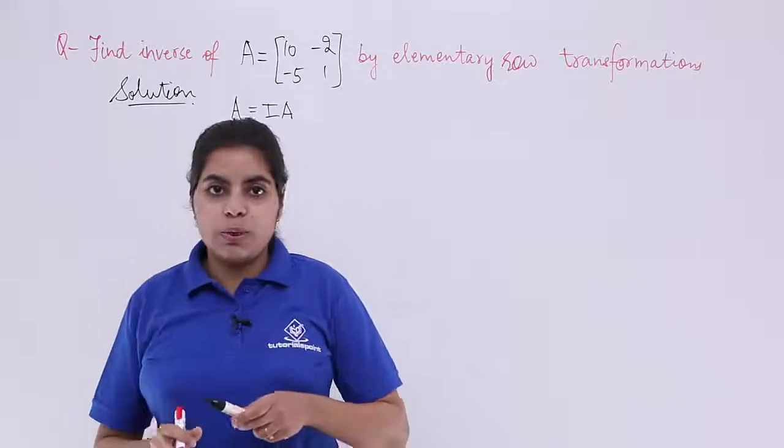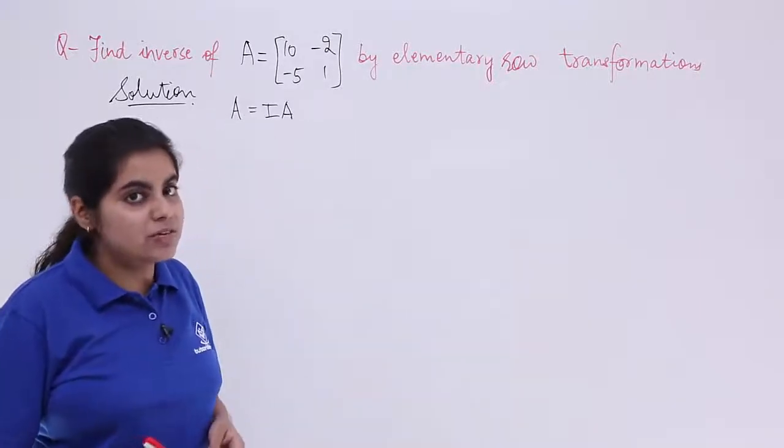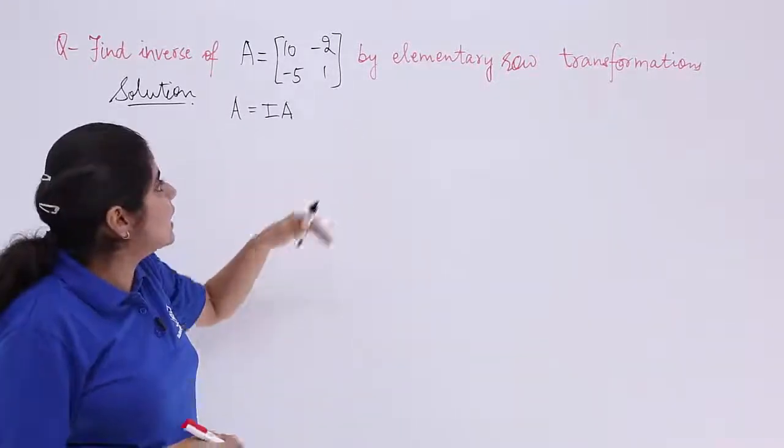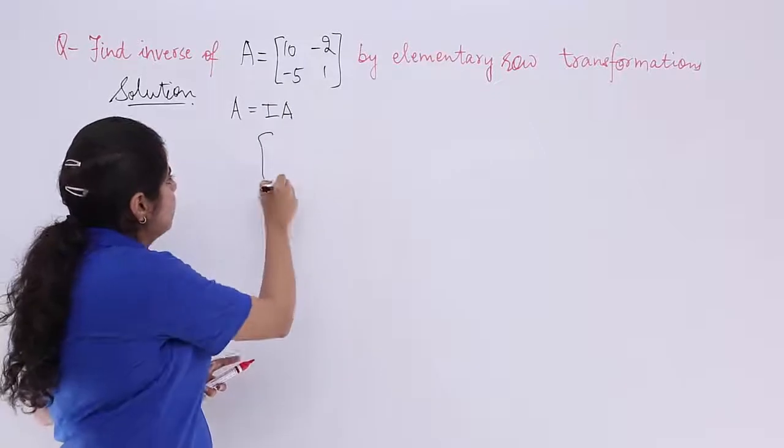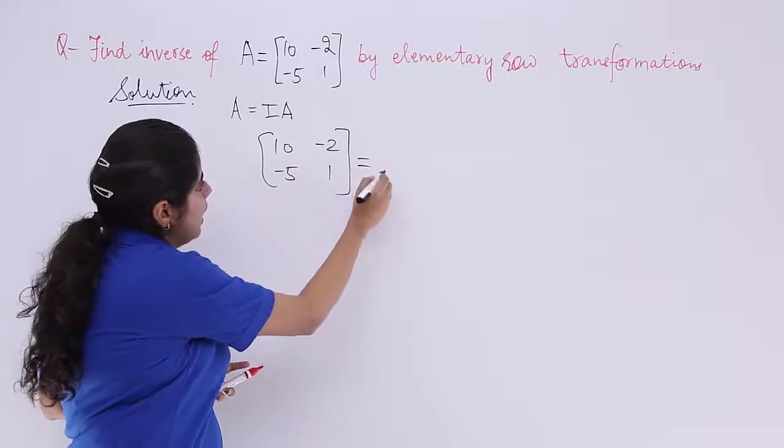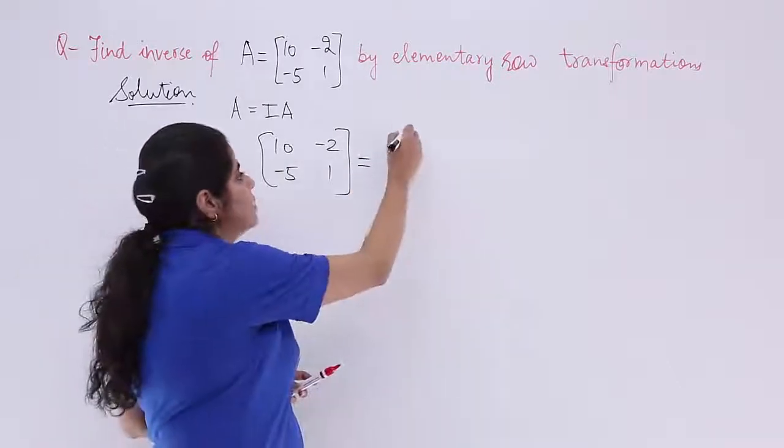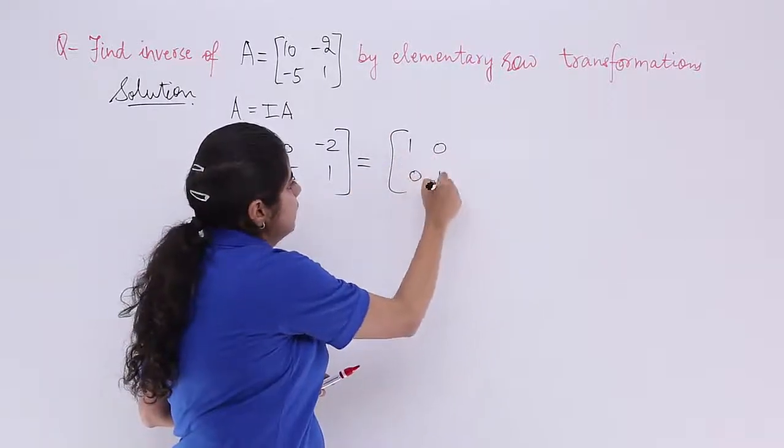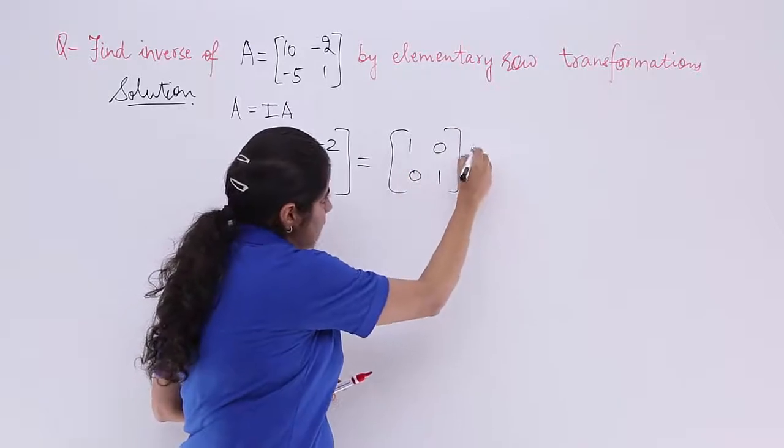A is equal to I A where I is the identity matrix. What is A? A is 10, -2, -5, -1. And what is I? I is 1, 0, 0, 1. And we write A as it is.